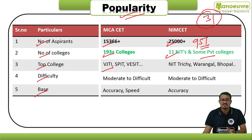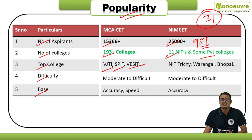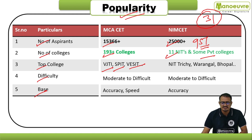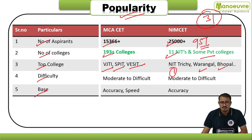Top colleges for Maharashtra MCA CET include VJTI (Veermata Jijabai Technological Institute), SPIT (Sardar Patel Institute of Technology), VESIT (Vivekanand Education Society's Institute of Technology), KJ Somaiya, Viva College, and many more. For NIMCET, top colleges include NIT Trichy, NIT Warangal, NIT Surathkal, NIT Bhopal, and others.